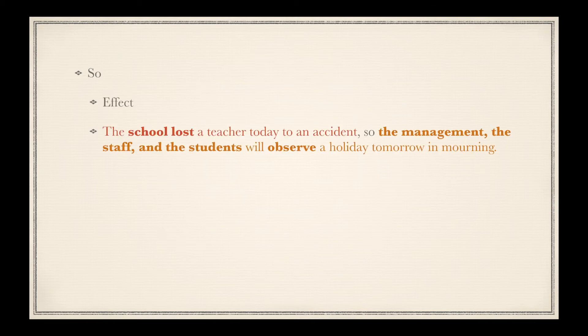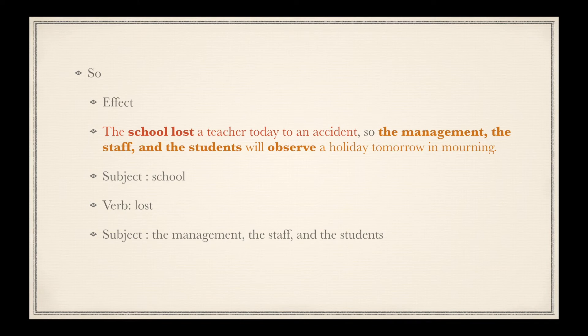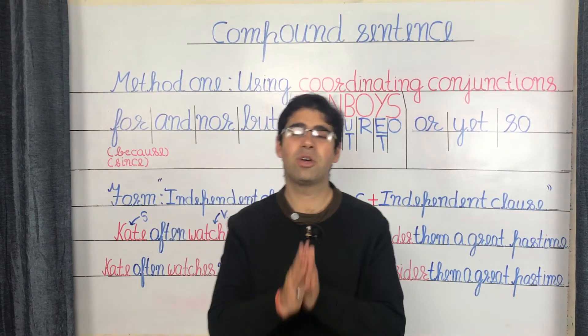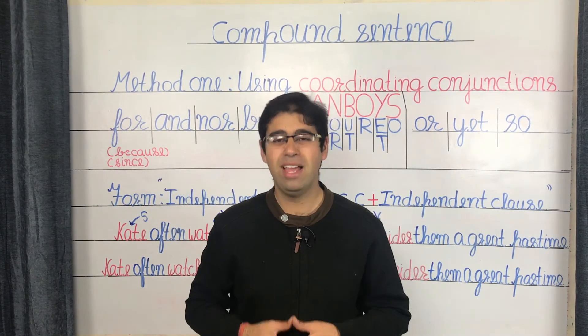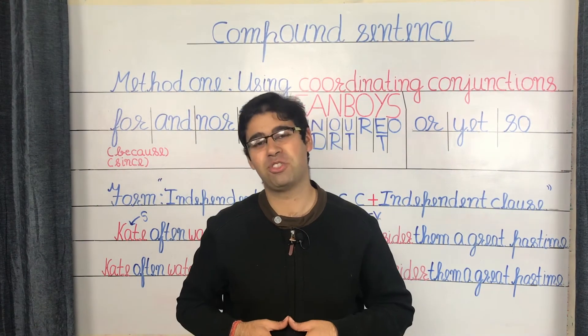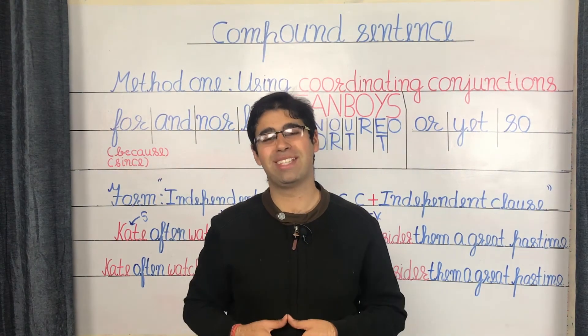Finally, so introduces the effect of a cause: 'The school lost a teacher today to an accident, so the management, staff, and students will observe a holiday tomorrow in mourning.' School is the subject with lost as the verb in the first clause; management, staff, and students together function as the subject with observe as the verb in the second. Now let's proceed to the final method of constructing a compound sentence, which is using the semicolon.